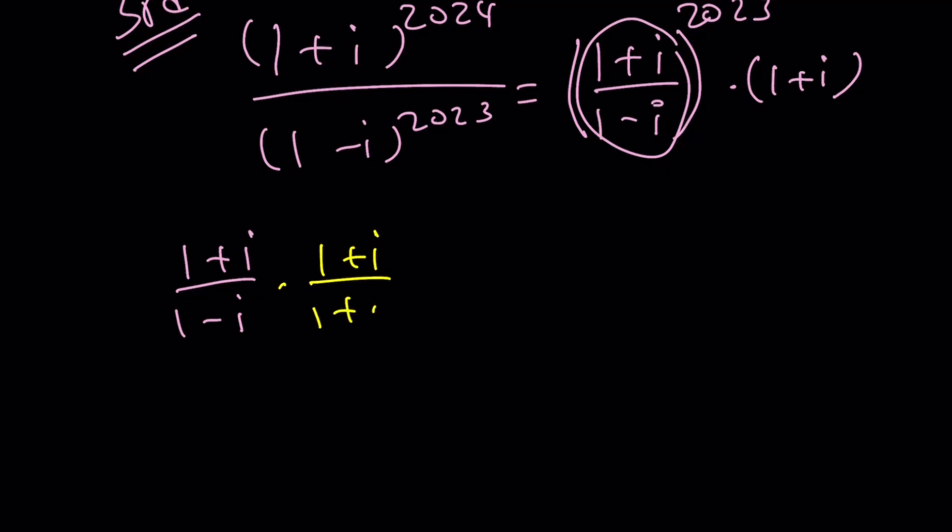Let's go ahead and multiply by 1 plus i. The conjugate, that's going to give us the square of 1 plus i, which is 2i. I hope you remember that. And this is going to give me a 2. And that's going to give you an i. An i for an i. So now you're going to end up with i to the power of 2,023 times 1 plus i.